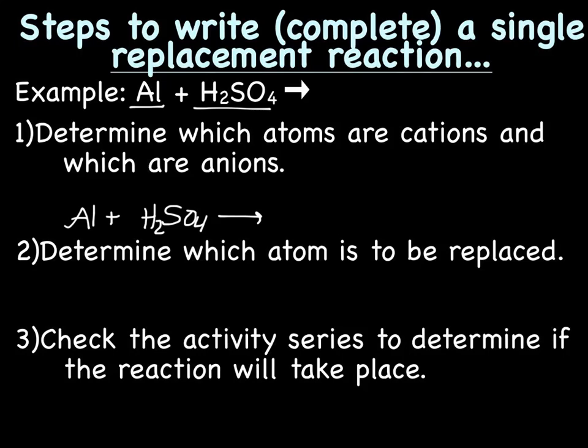Aluminum is a metal and it forms a cation with a 3 plus charge. Hydrogen, it's written first, which means it's in the group 1A area. It's a metal, forms a cation with a 1 plus charge. And then we've got sulfate, SO4, which is a polyatomic ion with a 2 minus charge.